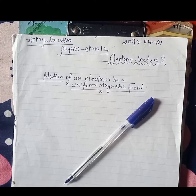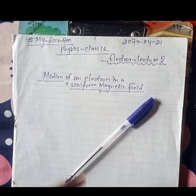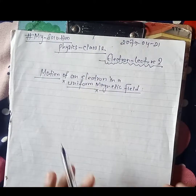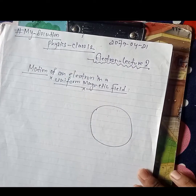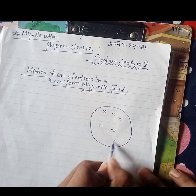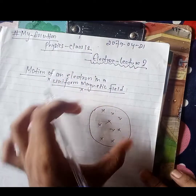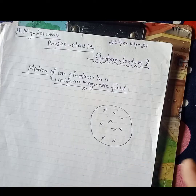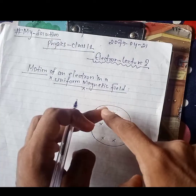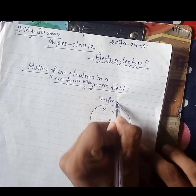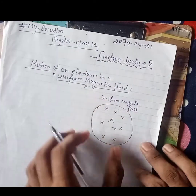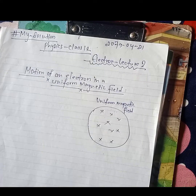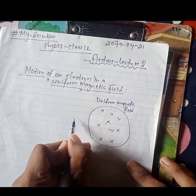Now, the lecture is the motion of electron in a uniform magnetic field. Let's start with the figure. This is the figure. We have a uniform magnetic field. This is a circle. In this circle, we are going to enter the electron. Suppose the electron is here.